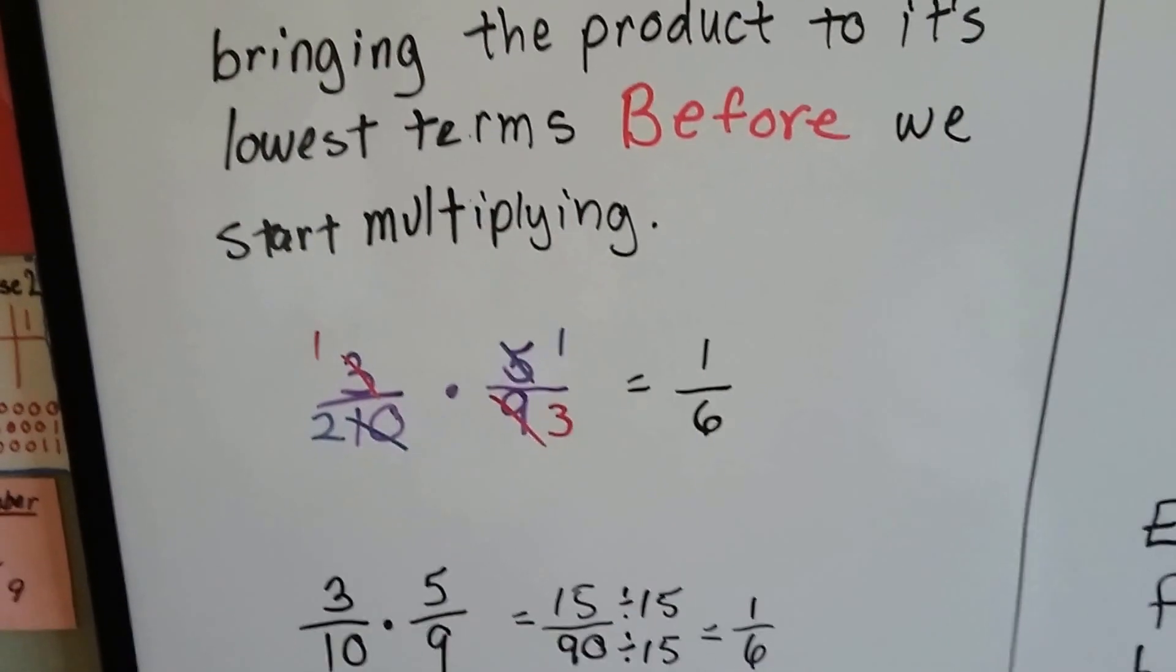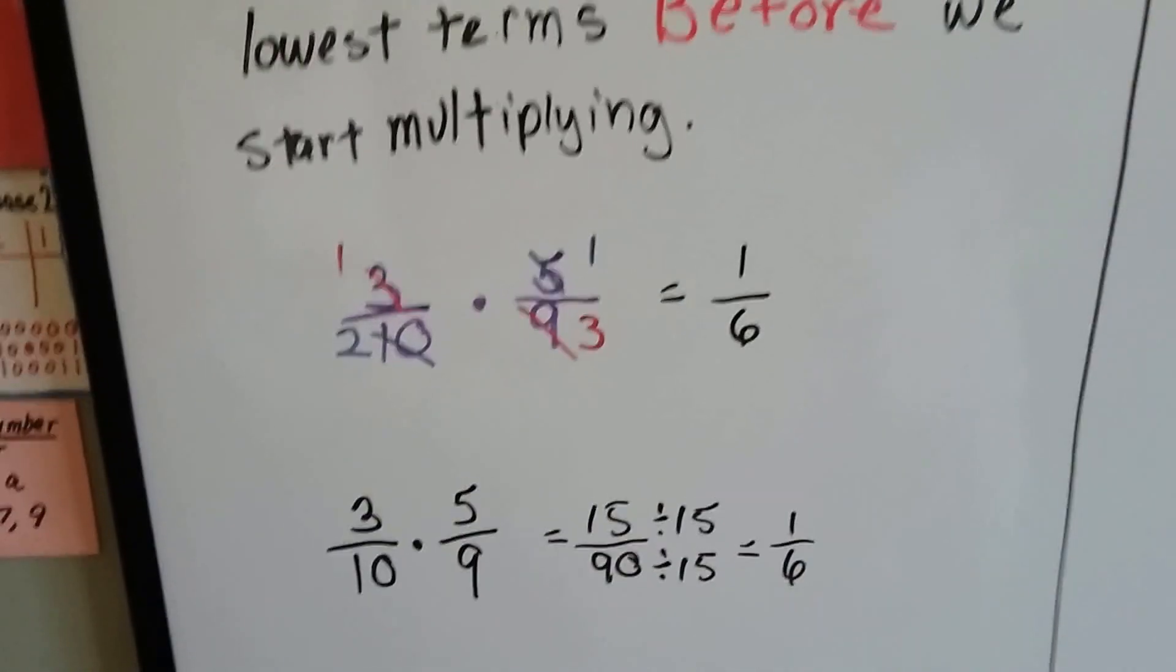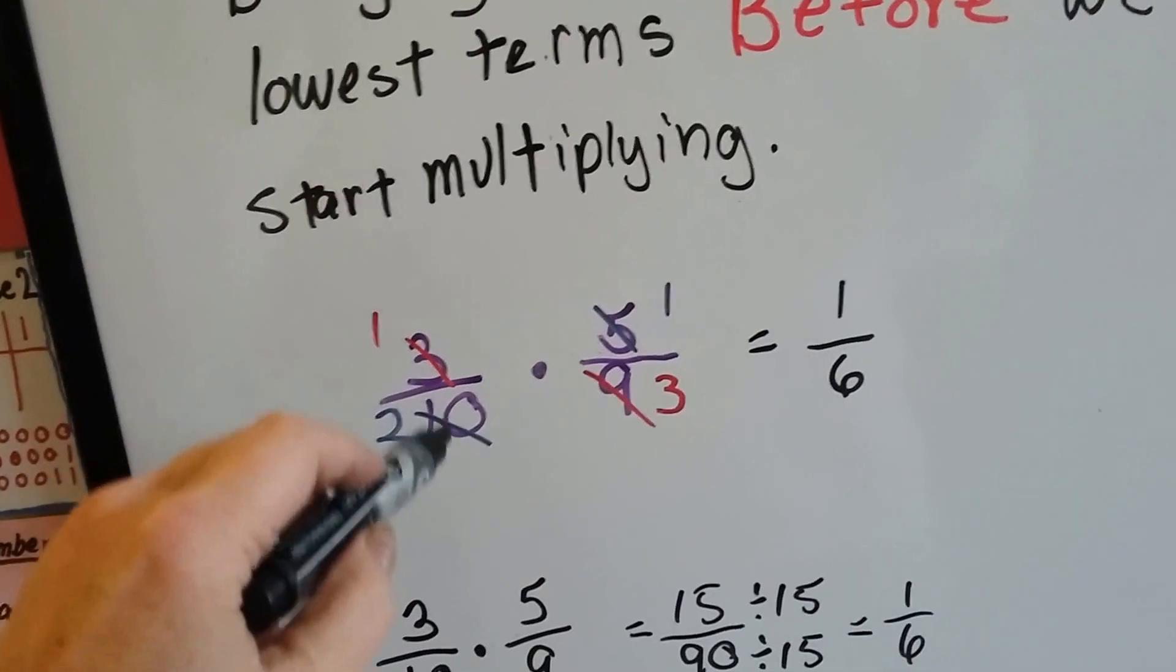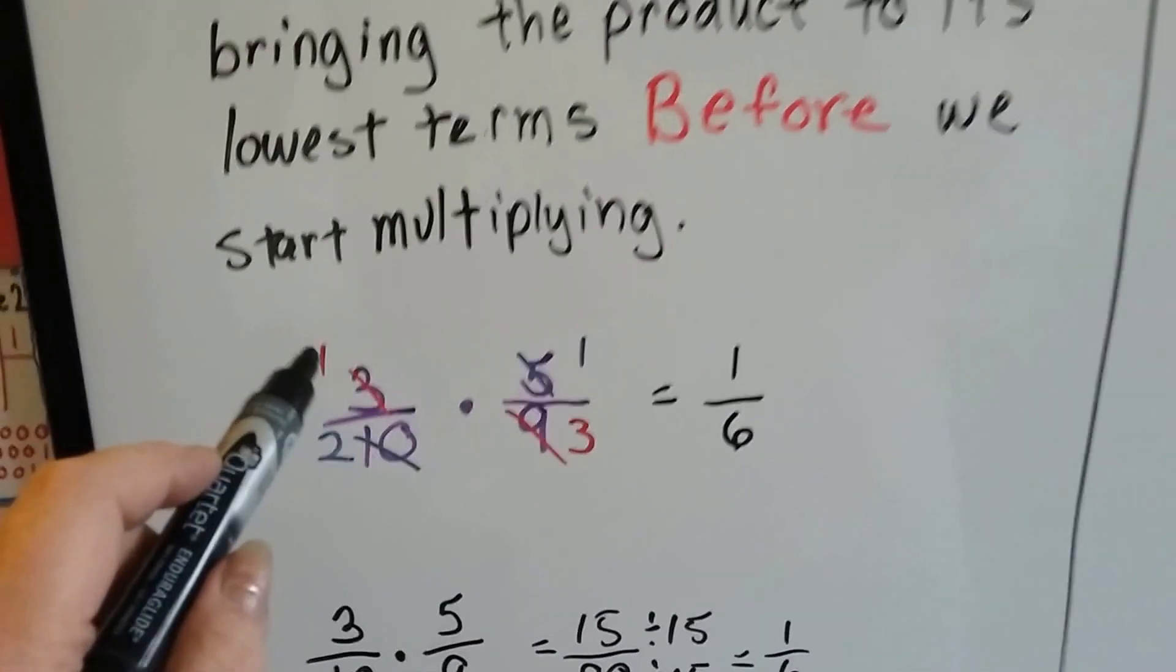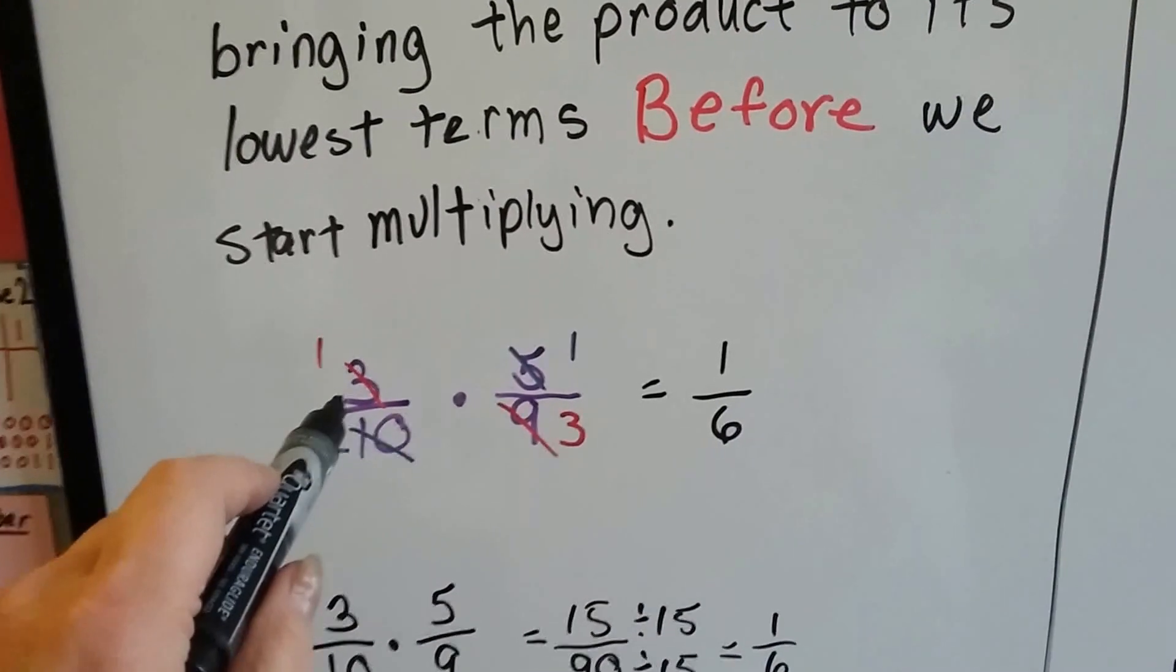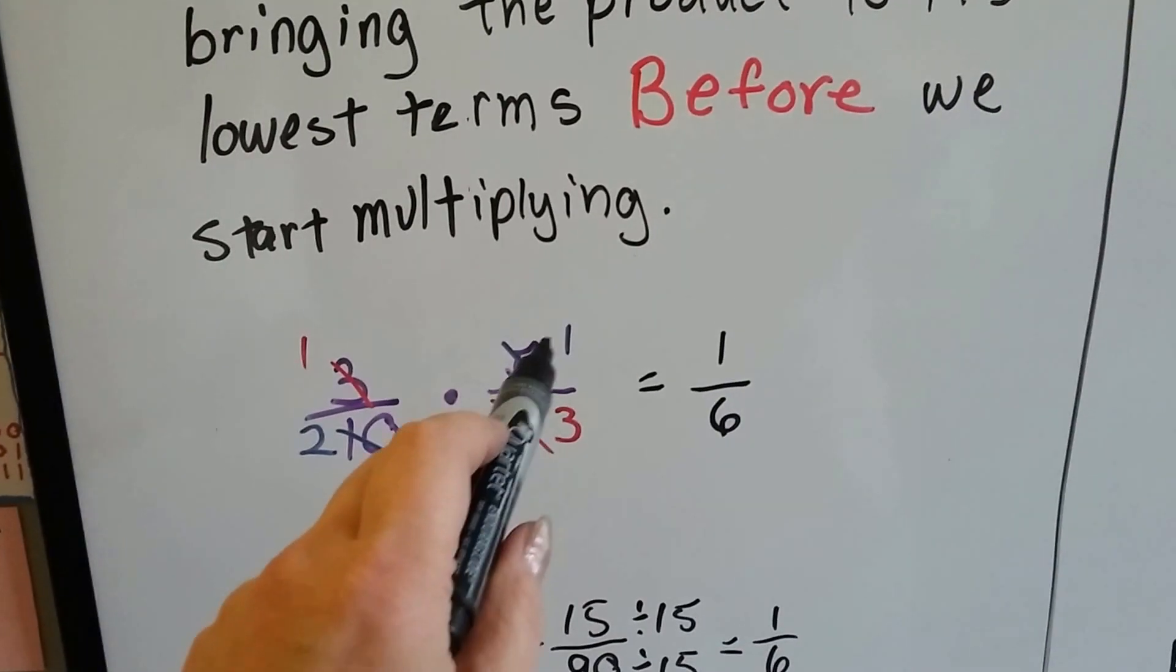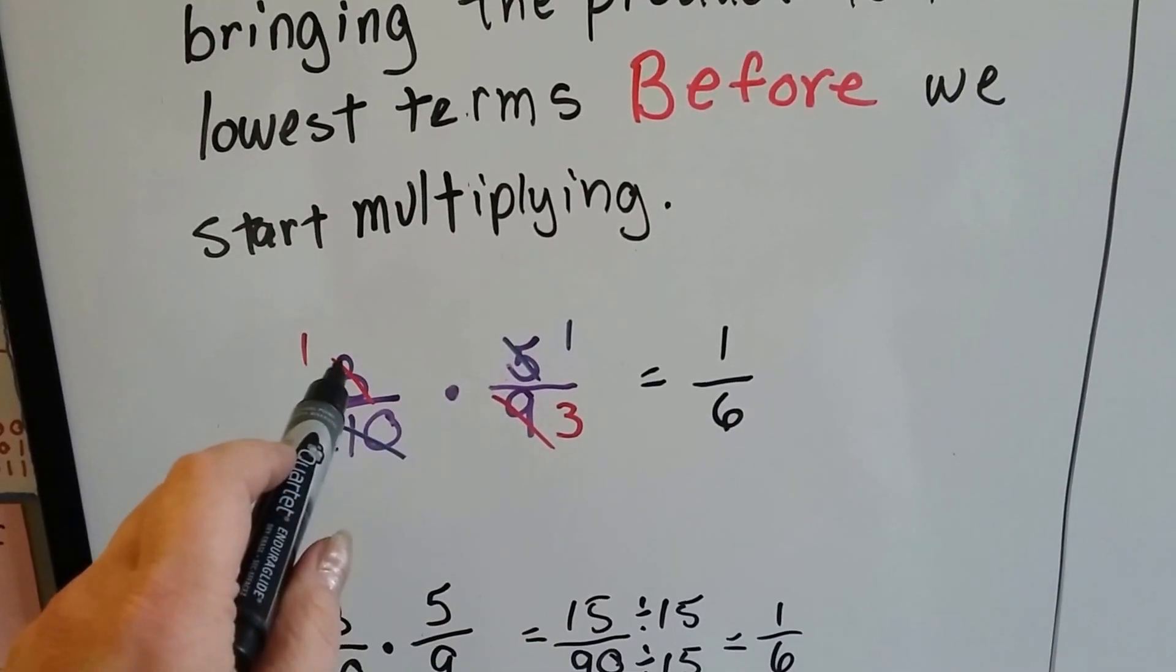I know this is kind of hard to see because I wrote over it, but it's 3/10 times 5/9. What we do is we cancel them out. The 3 and the 9 can work together and the 5 and the 10 can work together.